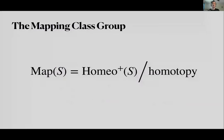The mapping class group is associated to a surface — a two-manifold. We look at the self-homeomorphisms of that surface that preserve orientation, and then we consider them only up to homotopy. This forms a group and is very classically studied.